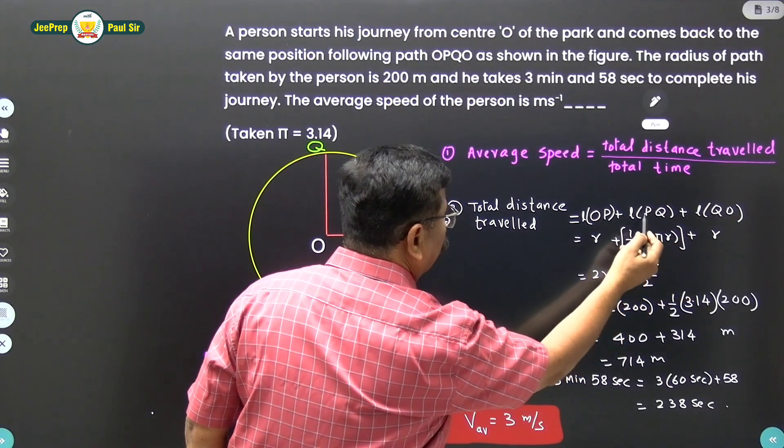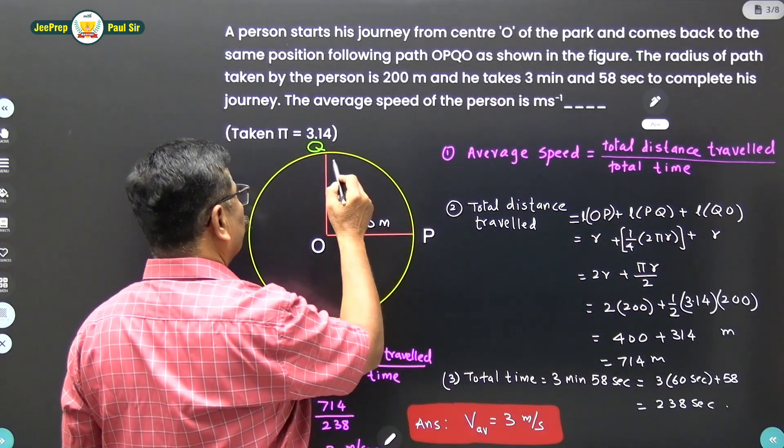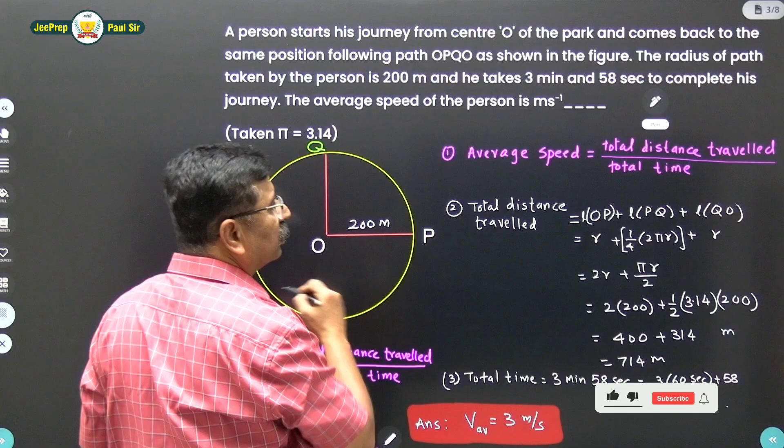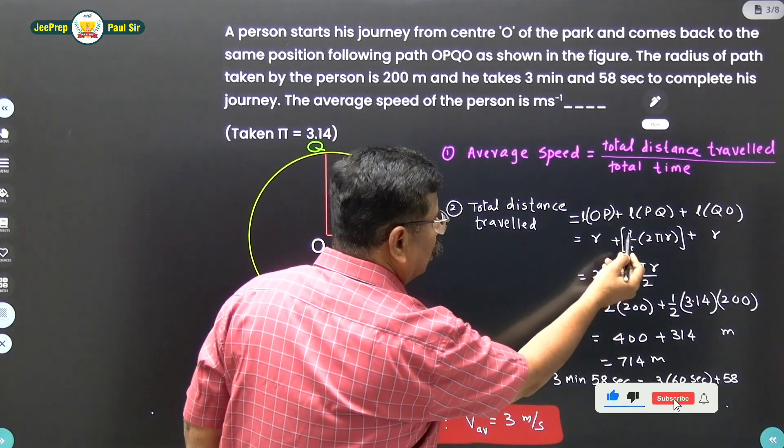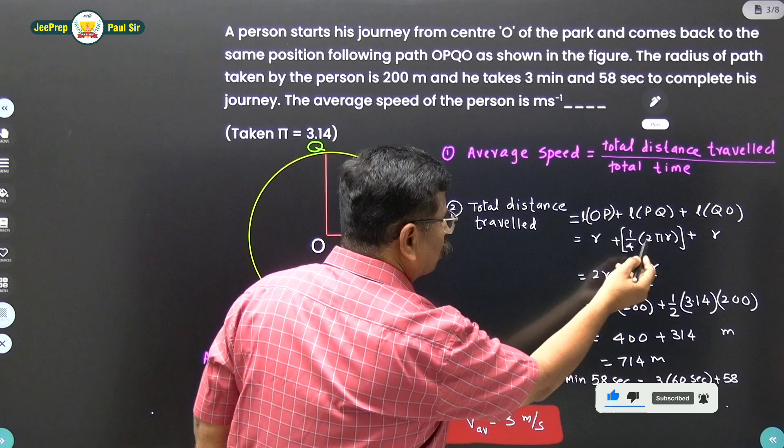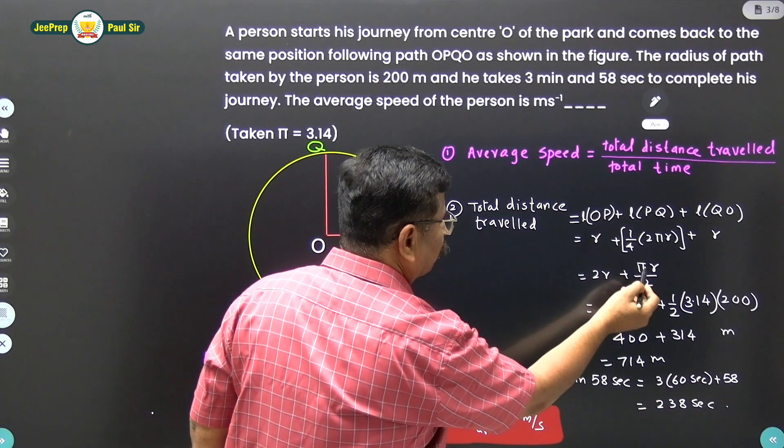So I have written R plus R and this length PQ is one fourth of the total circumference of this circular path. So 1/4 into 2πR. So this 2 will get cancelled with this 4.